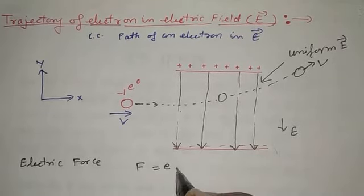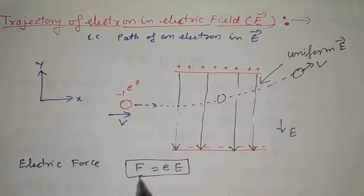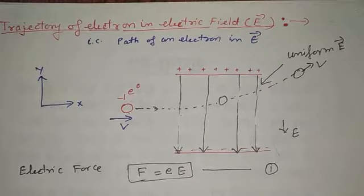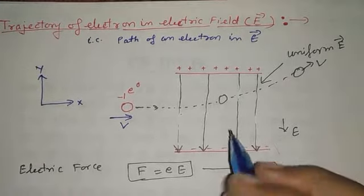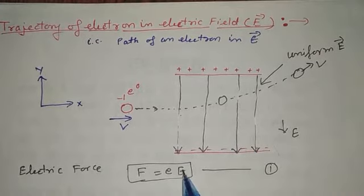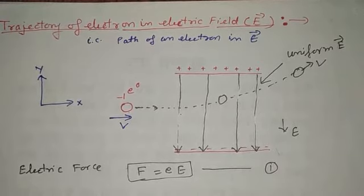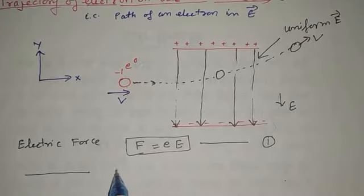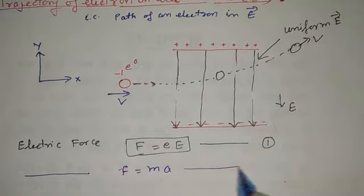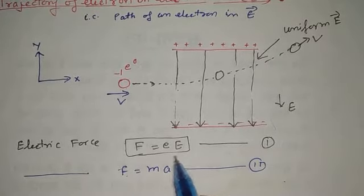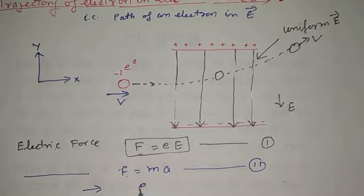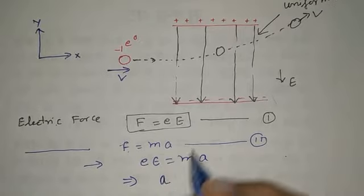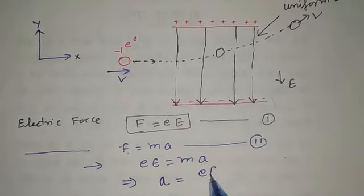This electric force is given by formula e into capital E. We are knowing well-known formula force is equal to Q into E, where E represents the charge of electric field. Now, when this electron experiences electric force, that is F is equal to eE, gets an acceleration. And by this acceleration, it is moved forward. According to Newton's second law of motion, this force is equal to mass into acceleration. This force is because of the electric force. So one may write by equation 1 and 2, eE is equal to ma, which implies that acceleration acts on electron in electric field is equal to eE by m.